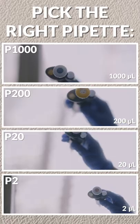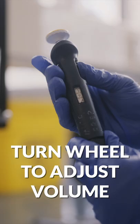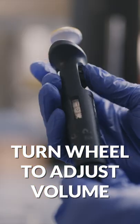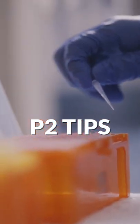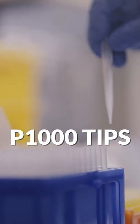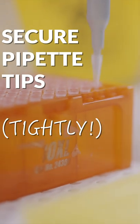How to pipette in 60 seconds. Step 1: Pick the right pipette and set the volume by turning the wheel. Step 2: Pick the right size tips and secure them tightly.